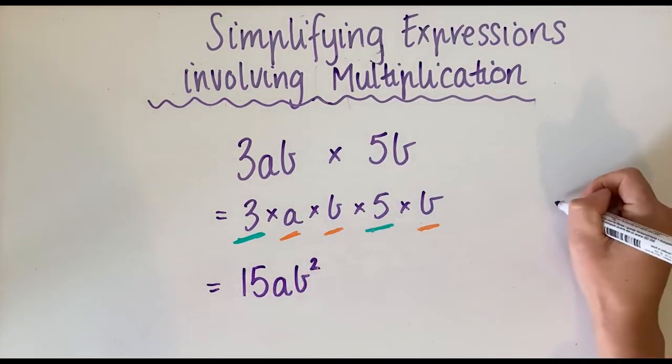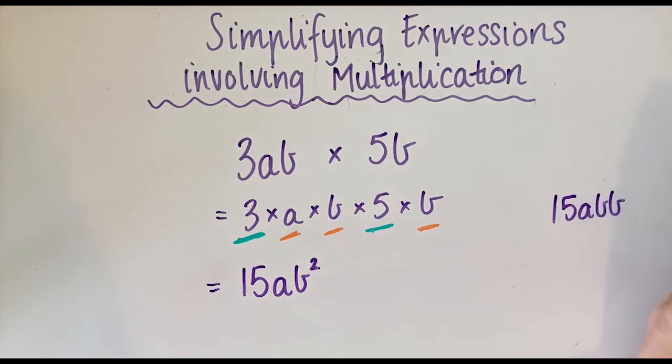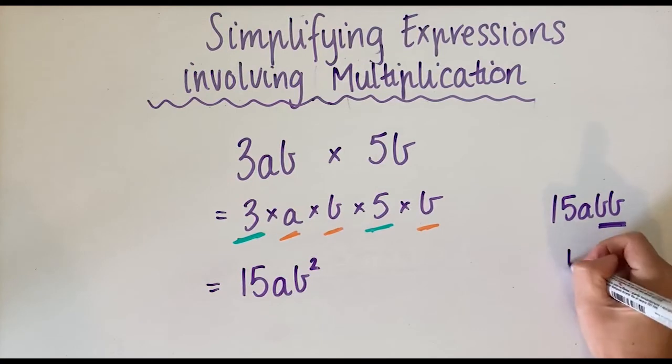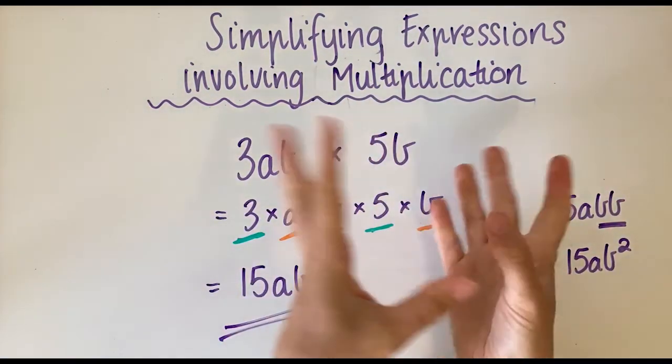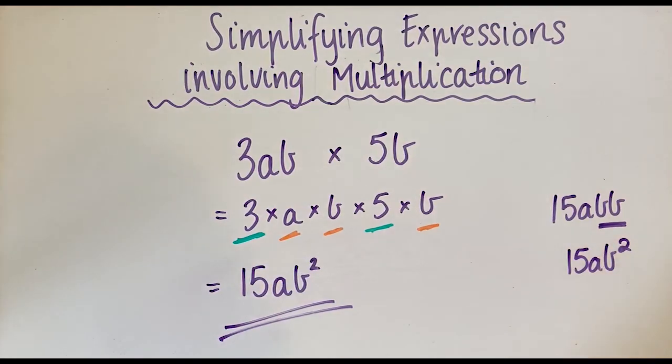Because it looks funny when you have two of the same letters next to each other, we change that to squared. It's a little bit more simplified, and that is the whole goal of this activity. So 15ab². What you need to do is stretch it out, put the numbers together, put the pronumerals together, and write it in a more simplified version.